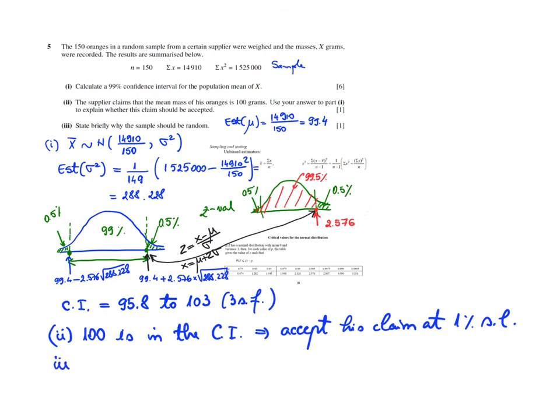And the last question is a bit obvious. Briefly explain why the sample should be random. Well, to avoid bias. To avoid bias, right? You want an unbiased result. And this will give you one mark.